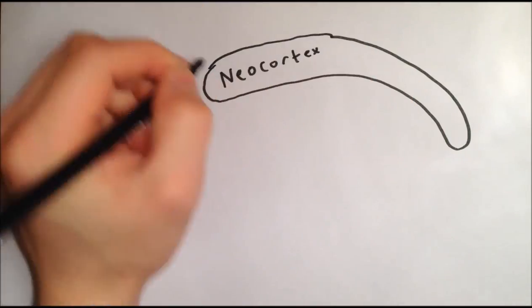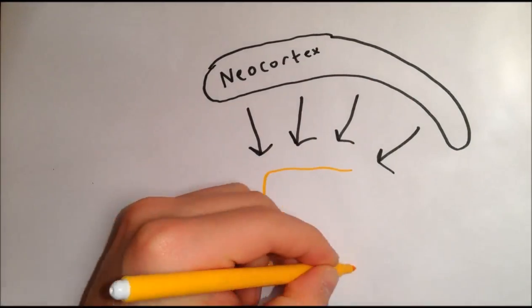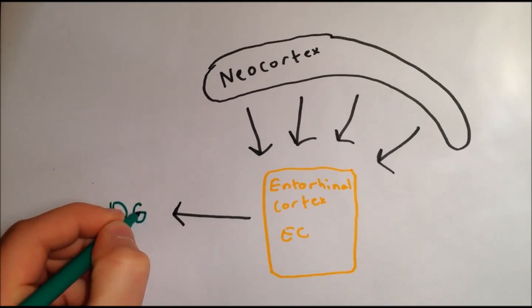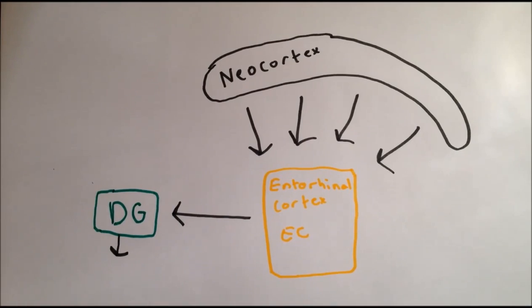The entorhinal cortex receives input from all parts of the neocortex in a compressed manner. It then projects through the perforant pathway to the dentate gyrus, and then from the dentate gyrus to CA3.